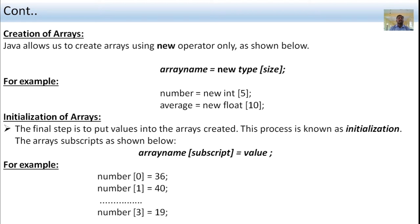For the initialization examples: number[0] = 35, where 'number' is the array name, 0 is the subscript, and 35 is the value. number[1] = 40, where 1 is the subscript and 40 is the value. number[3] = 19, where 3 is the subscript and 19 is the value. In this way you initialize the array elements.